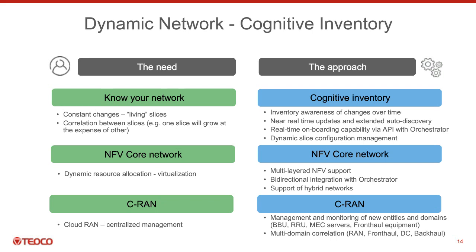You also need to support multi-layer NFV — modeling from a configuration perspective all these structures, both from a legacy perspective and from a cloud-RAN perspective, understanding new domains and entities such as the fronthaul, mobile edge computing servers, and baseband units. For instance, implementation of fronthaul — based on massive deployment of fiber — creates another point of failure. Before, you had only fiber cuts in the backhaul; now you might have fiber cuts in the fronthaul. How do you correlate that from a multi-domain perspective and understand which impact this specific problem has on the slices, quality of service, and quality of experience?